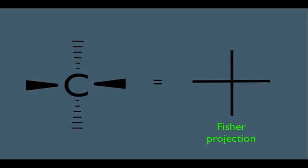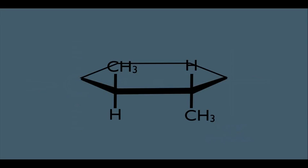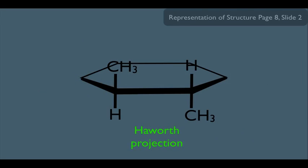But there's one more perspective we should know just in case. This right here is called the Haworth projection of a molecule. What's trying to be expressed here is that we have a six-membered ring with two CH3 groups attached. One above the ring and one below the ring.